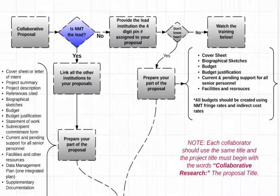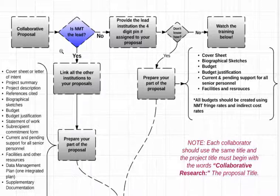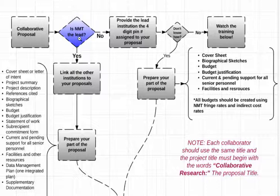In this video we're going to talk about NSF Fastlane collaborative proposals and the procedure here at New Mexico Tech. The key question when having a collaborative proposal is whether we are the lead institution or we are not, and things change depending on which one we are. Let's start by assuming that we're not the lead institution — you are collaborating with another institution or there are several institutions involved.